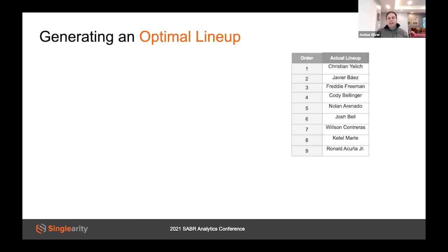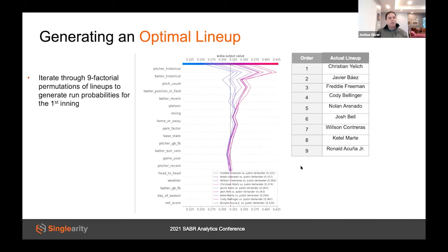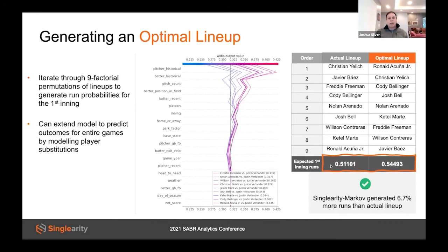Let's put that system to use to optimize the batting order for the National League All-Star team. We iterated through all nine-factorial batting orders using Singularity Markov and generated run-scored predictions for each. This takes about one hour on a modern laptop. We found a batting order predicted to generate 6.7 more runs in the first inning than the actual lineup selected by the manager.